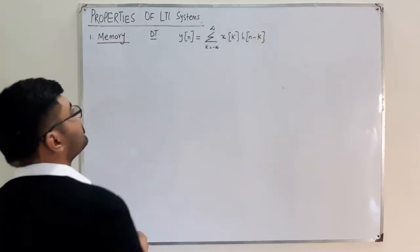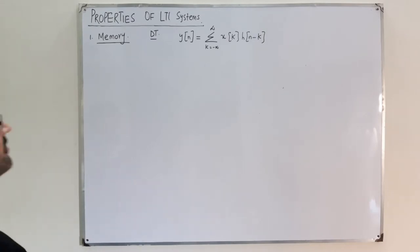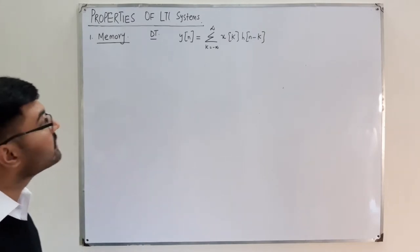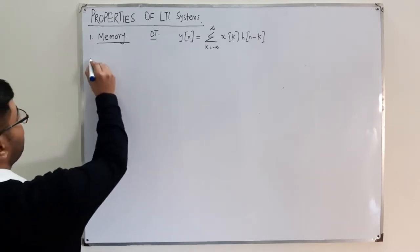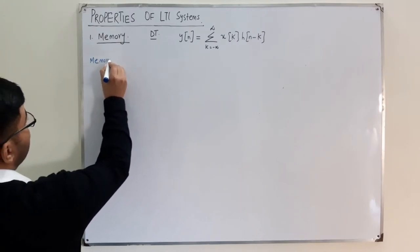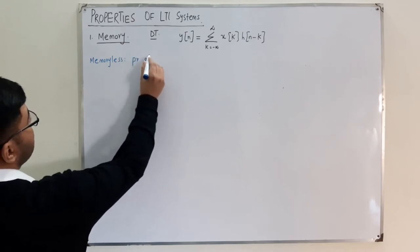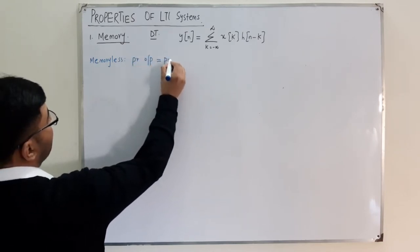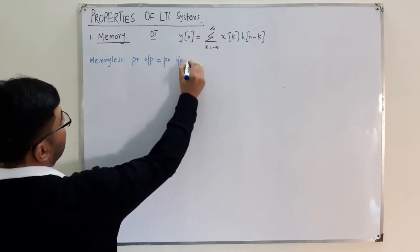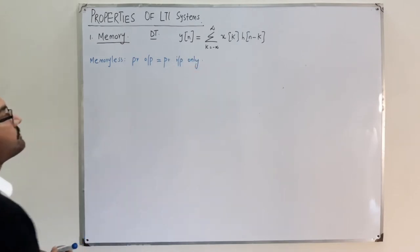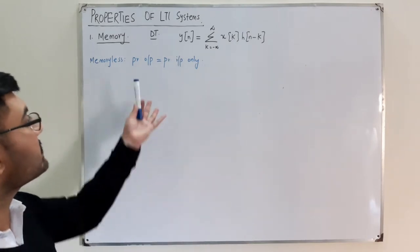Depending on memory, we could have either a memoryless system or a system with memory. For a memoryless system, the output depends only on the present input. For a system with memory, the output can depend on past and future values as well. Let's first talk about the memoryless case.